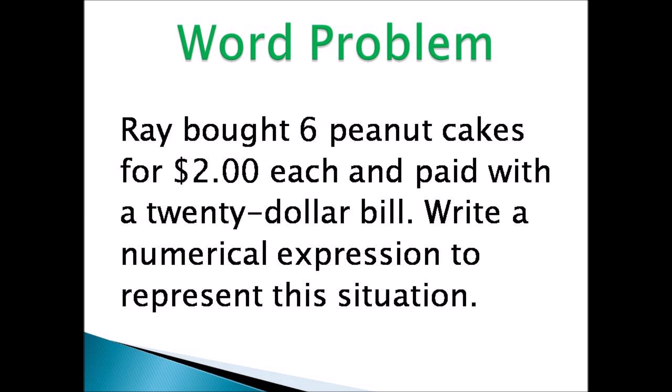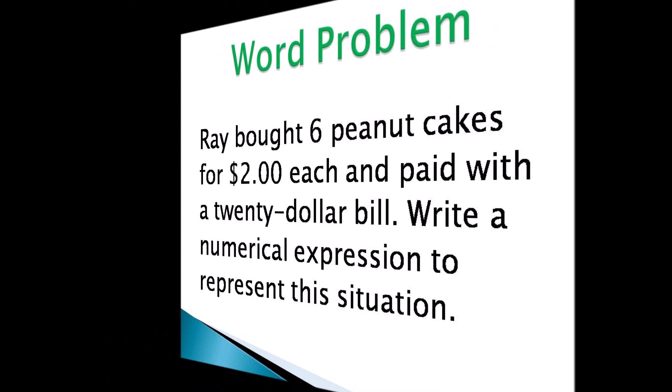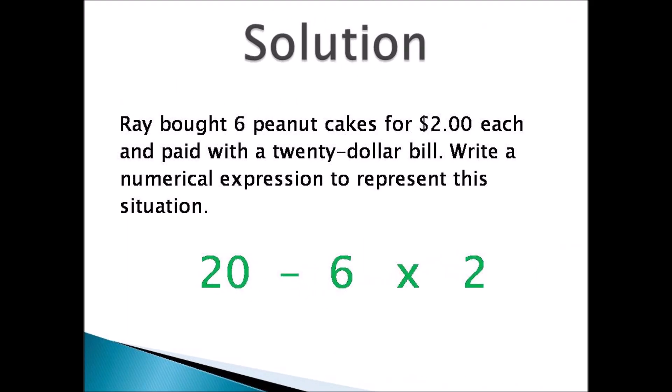Let's begin with a typical word problem. We bought six peanut cakes for $2 each and paid with a $20 bill. Write a numerical expression to represent the situation. So you'd have to write 20 take away 6 times 2 — that is, 20 minus 6 times 2. Now you can't just do the subtraction because of BODMAS, so you would have to multiply before you subtract.